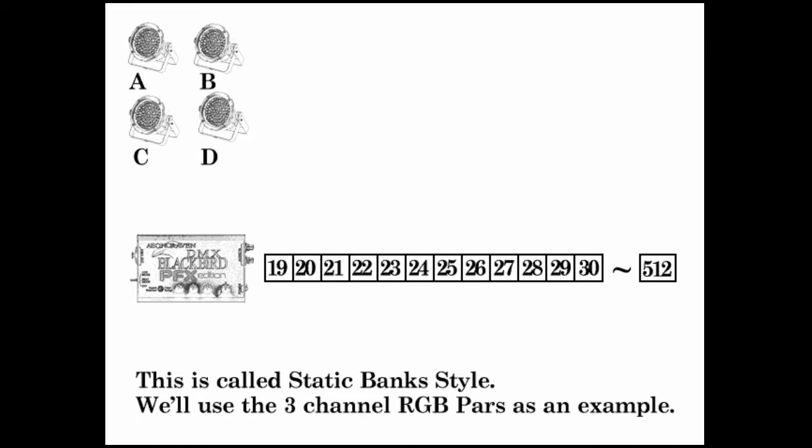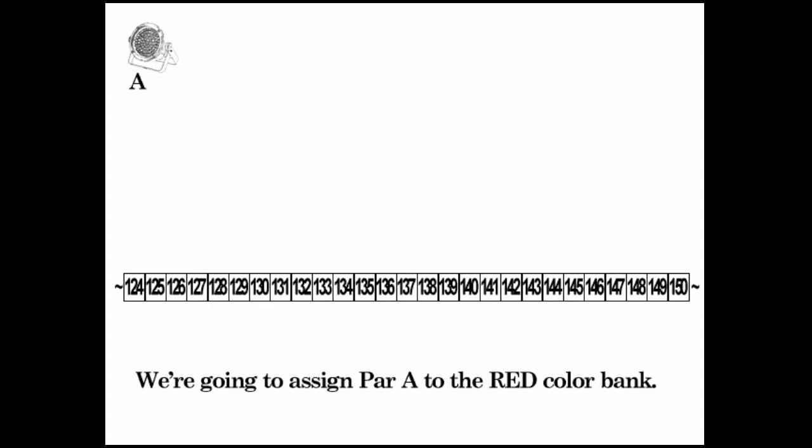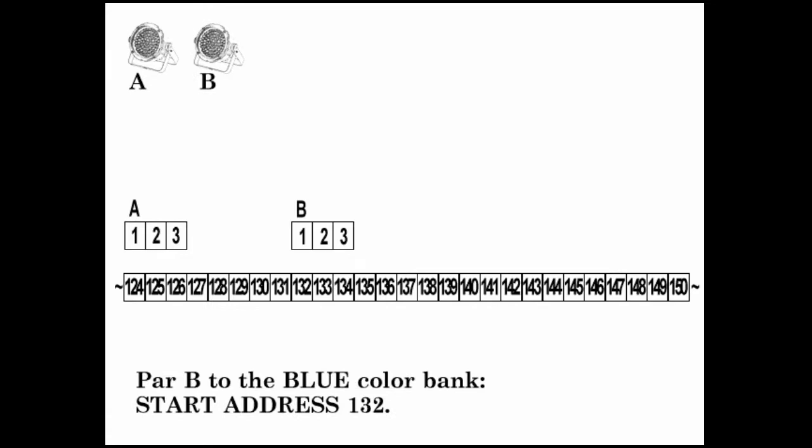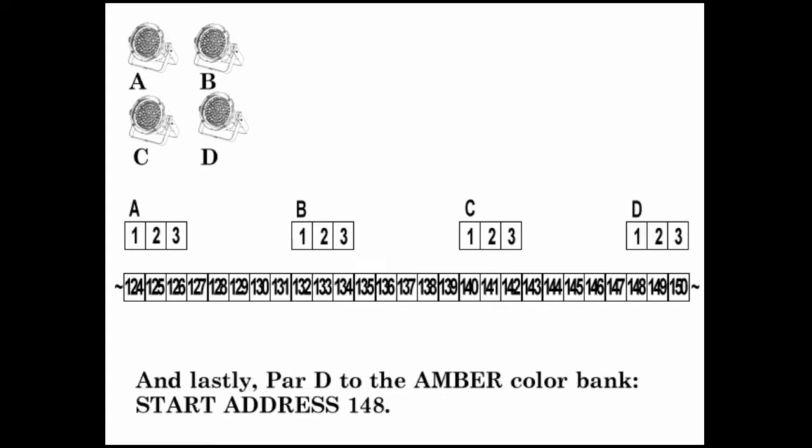We're going to assign PAR A to the red color bank. Its start address is 124. Par B to the blue color bank. Start address 132. Par C to the green color bank. Start address 140. And lastly, par D to the amber color bank. Start address 148.